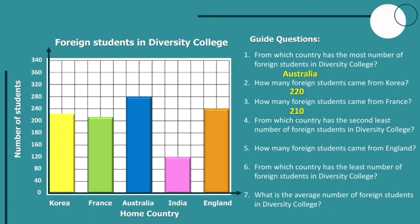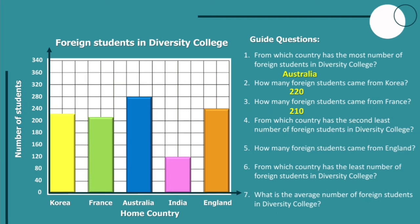Number four: which country has the second least number of foreign students in Diversity College? On the graph, we can see that India has the lowest. Then, the next after it is the green bar, which is France. So our answer will be France.